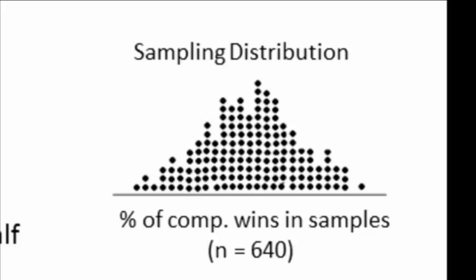What does it represent for each sample? It represents the percentage of games that the computer won in that particular sample. Don't be confused—when we talk about samples, we're talking about groups of 640 games that the computer has played. These dots do not represent individual games; rather, they represent individual samples of 640 games.